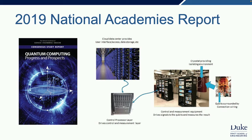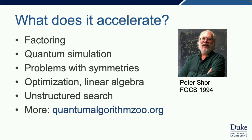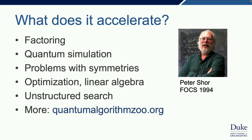Once we've built this quantum computer, what does it accelerate? There'd be no quantum computing if Peter Shor hadn't shown that if you could build a quantum computer, it could factor large numbers, which breaks a lot of public key cryptography. He also showed it allows you to calculate the discrete logarithm quickly, which breaks another set of public key cryptography. My own interest is in quantum simulation—how can we use a quantum computer to better understand molecules and materials? It can be used for linear algebra, optimization, and unstructured search giving a quadratic speedup. You can go to a website where they have all of the quantum algorithms listed.